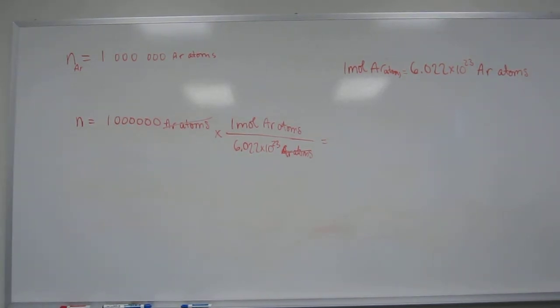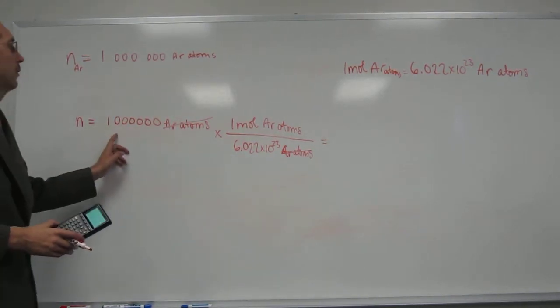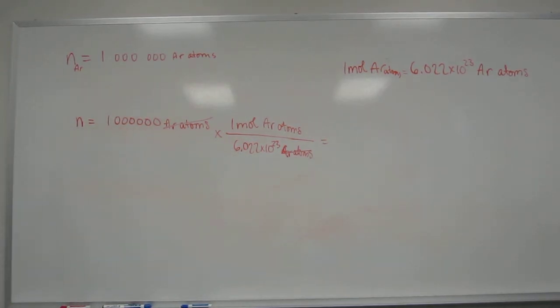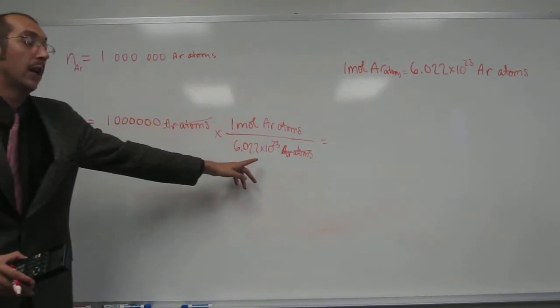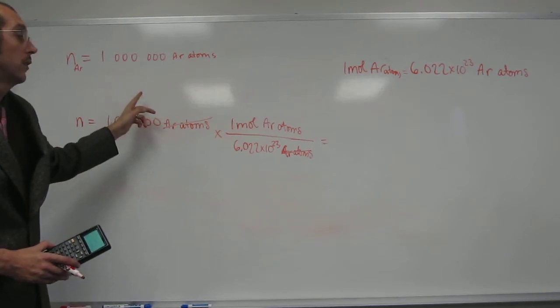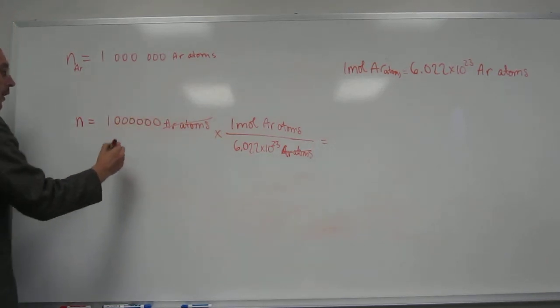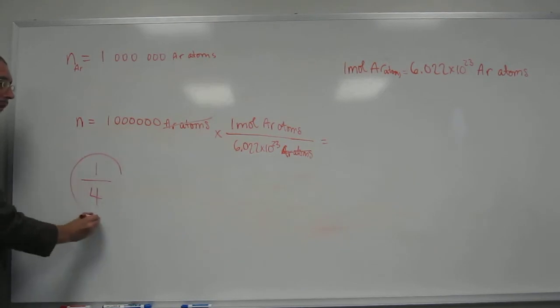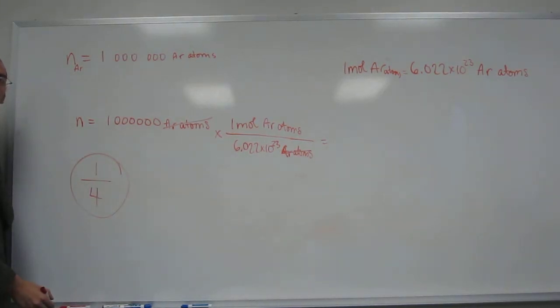So would you expect this to be a number smaller or bigger than 1? This is like 1.0 times 10 to the 6th and this is 1.0 times 10 to the 23rd. So this is dividing by this one. This one's big and this one's small. So that's like saying a small number divided by a big number. Is that bigger or smaller than one? That's smaller.